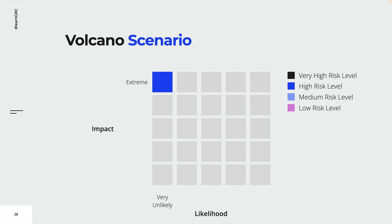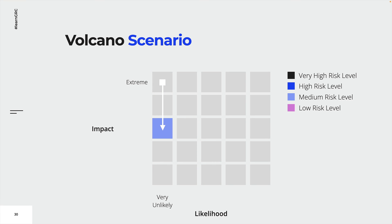The volcano risk was classified as a high risk, which is why it cannot be accepted by default. The risk can be reduced by risk treatment. The probability of the risk is already classified as very unlikely, which means this metric cannot be further reduced — organizations have no impact on volcano activity. But the impact of a volcano eruption can be reduced by relocating the data center, signing an insurance policy, or establishing backup sites, to name just a few possible controls. By implementing these controls, we can lower the impact and therefore decrease the level of risk, bringing it within the risk acceptance criteria.